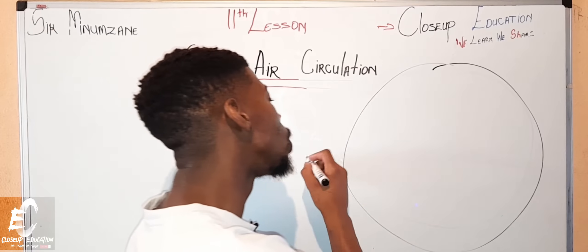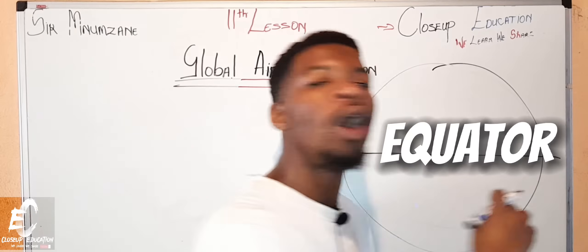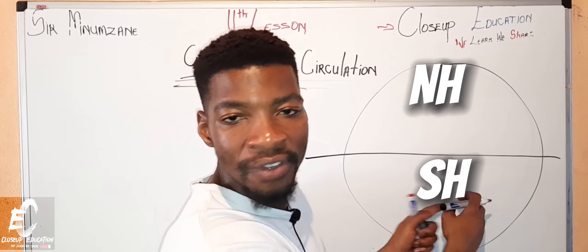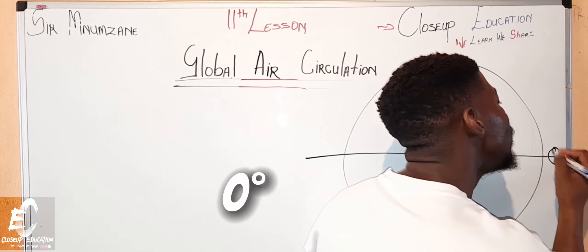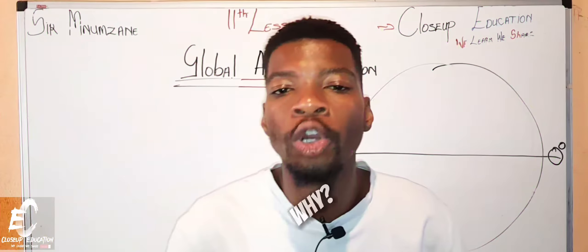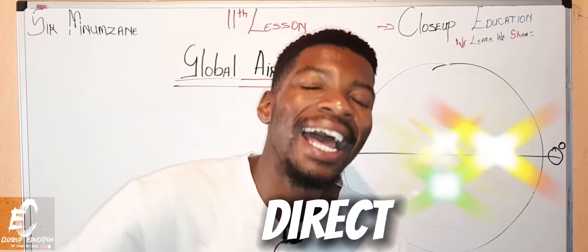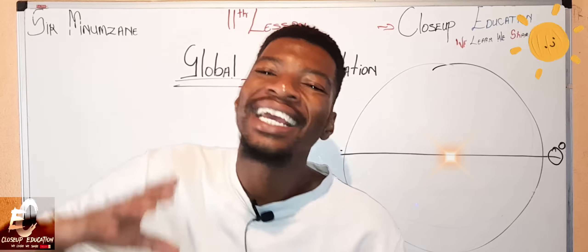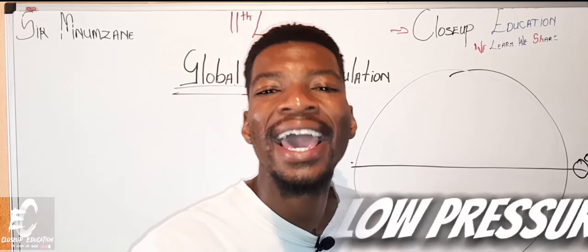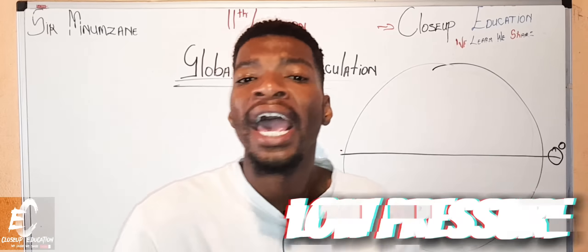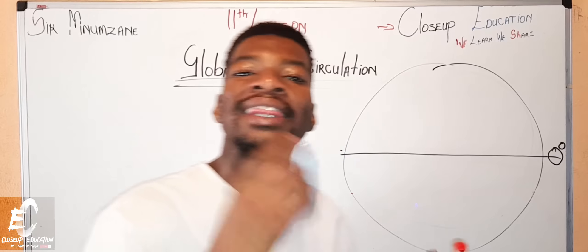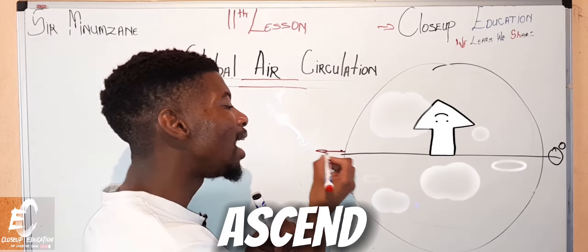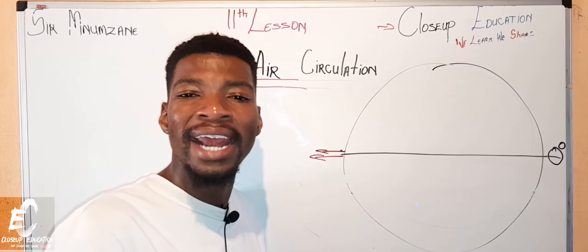Our first latitude is the invisible line that separates the earth, known as the equator, which separates the northern and southern hemispheres. The equator sits at zero degrees because it receives direct sun radiation — direct insolation — meaning the equator has low pressure.